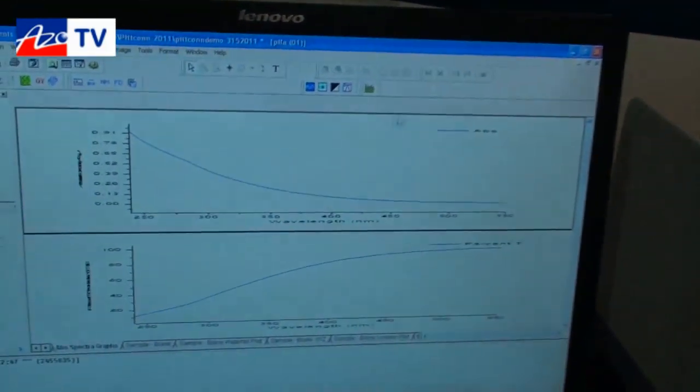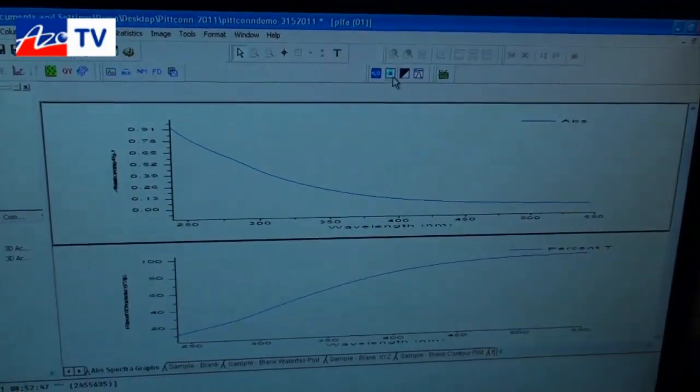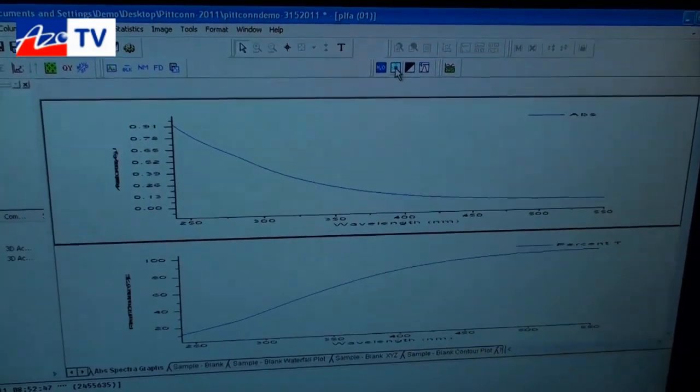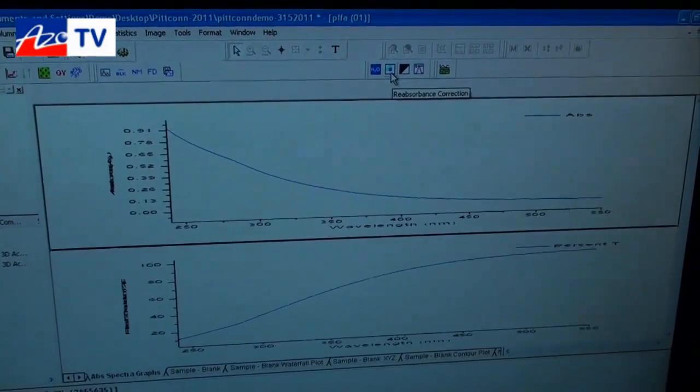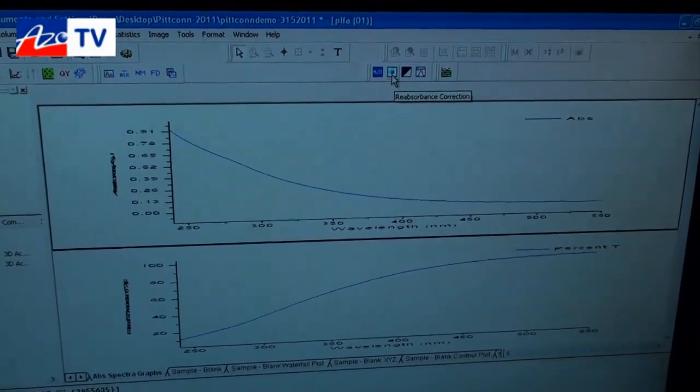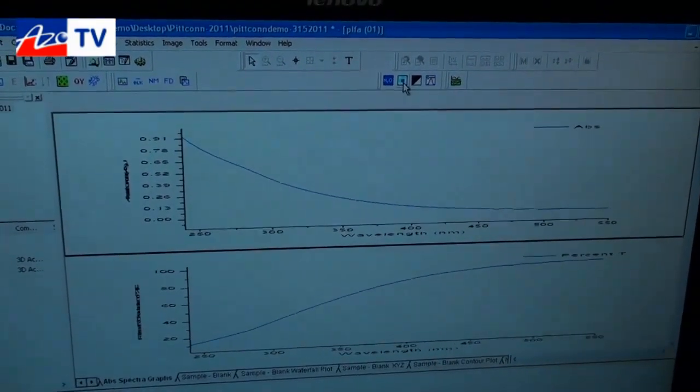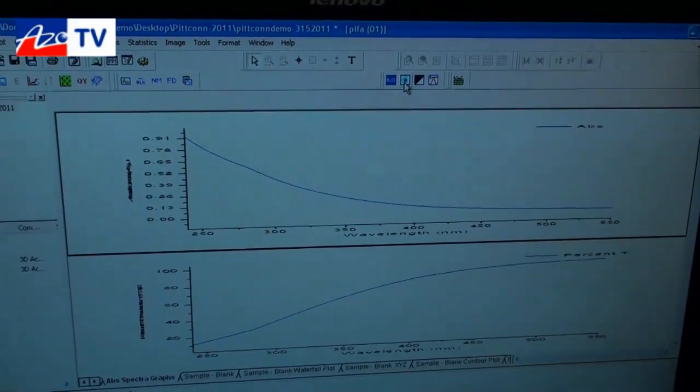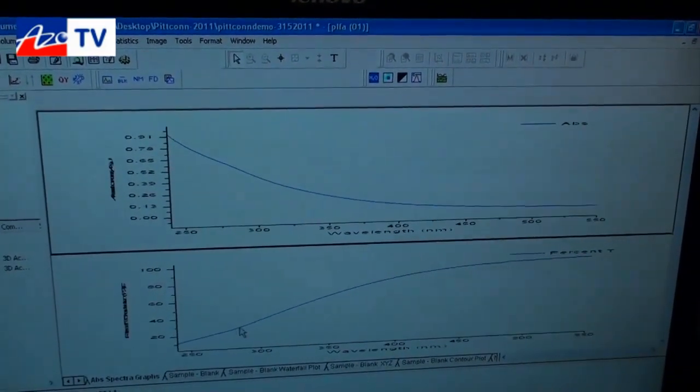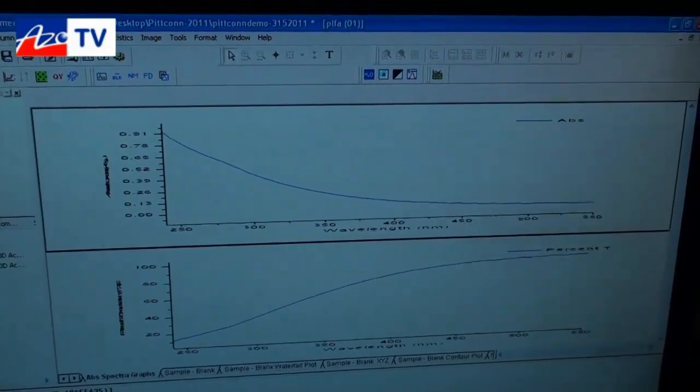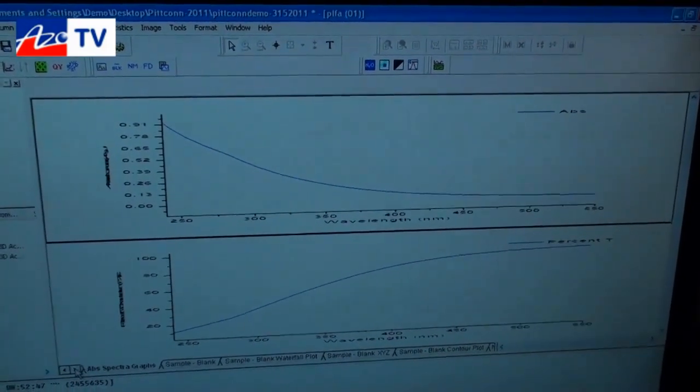So we have a special algorithm for this instrument called the reabsorption correction and what you'll see here is the button that we use to activate that tool. What that does is it corrects the fluorescence with the excitation spectrum to yield an undistorted fluorescence spectrum.